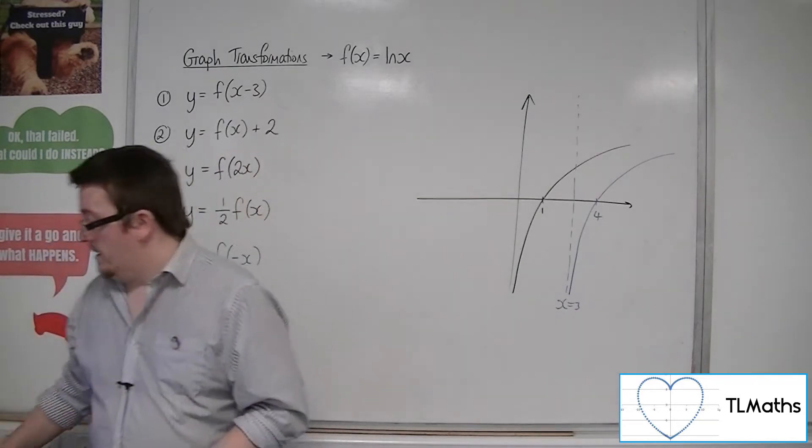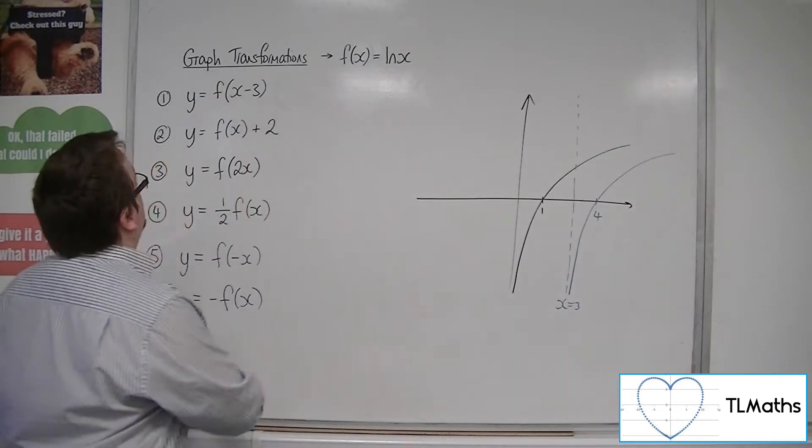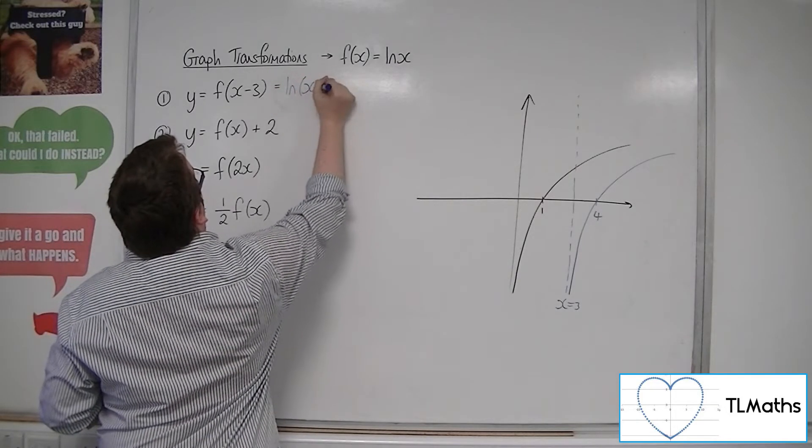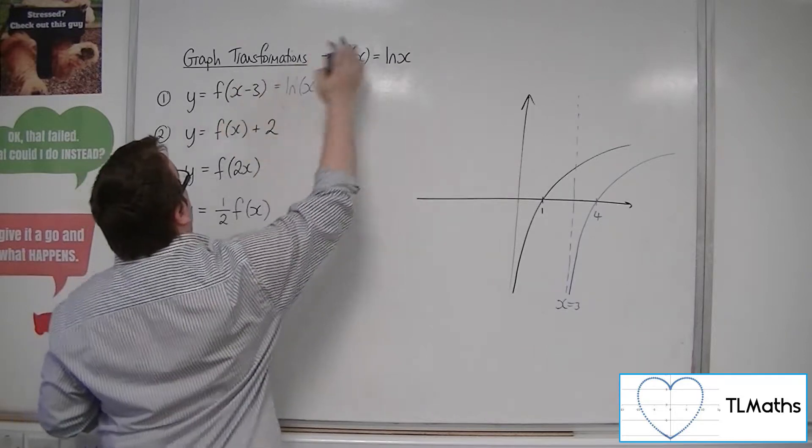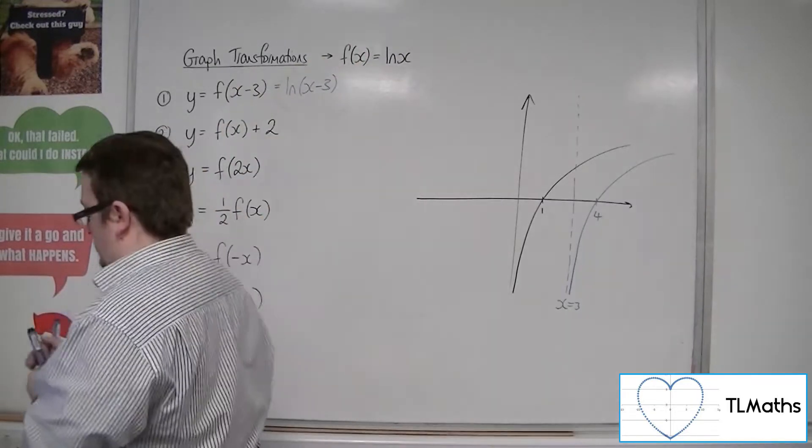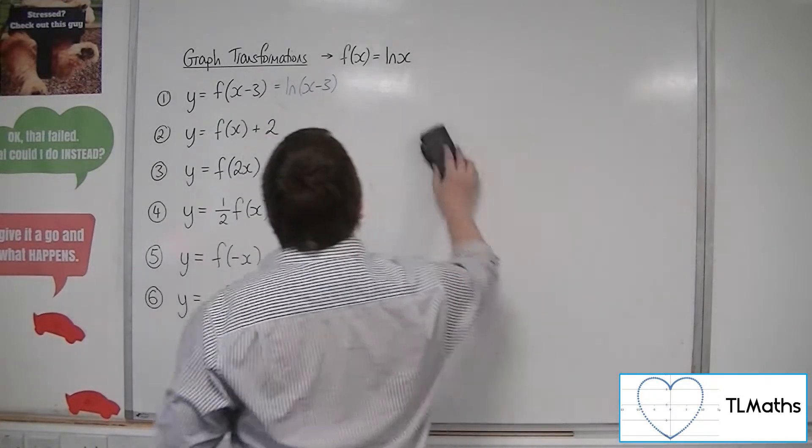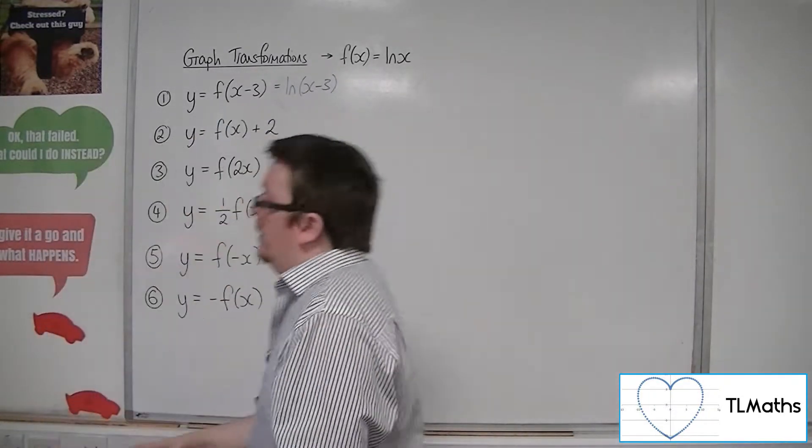And draw it in. Now, as for the equation, that would be ln(x - 3). The x is replaced with x minus 3.